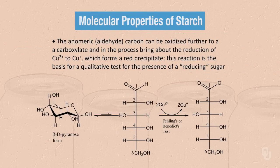It is important to keep in mind that the conversion between the linear form and the cyclic forms is a dynamic process. The equilibrium greatly favors the cyclic forms, and in particular the beta form. The reason why the beta form predominates is because the C1 hydroxyl experiences less steric hindrance in the equatorial position. However, it is possible to introduce a reagent called Fehling's reagent, or Benedict's reagent, that will oxidize the aldehyde carbon — carbon-1, the anomeric carbon.